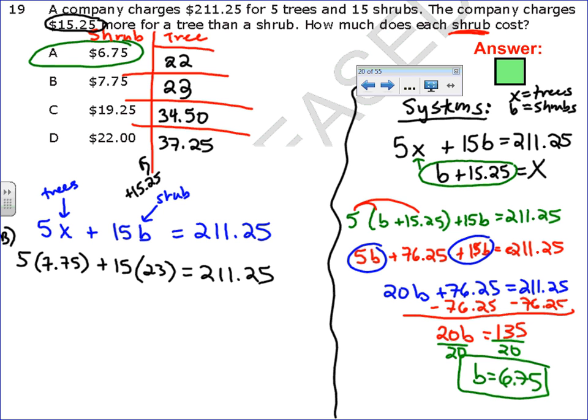So, five times the shrub cost, which is, and this is for answer choice B, 7.75 plus 15 times 23 equals 211.25. Well, if I multiply that out, I switched it up. This is the shrub cost. My bad, 7.75. So five times the tree cost, which is 23, plus 15 times the bush price, which is 7.75. There we go.